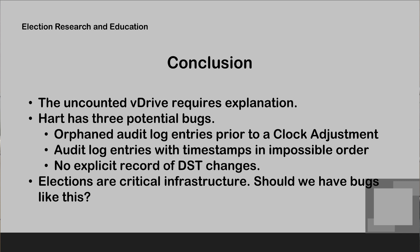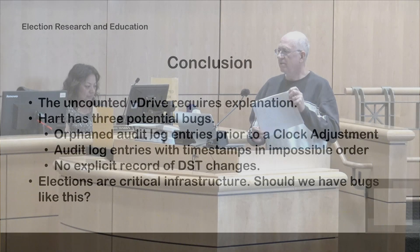I think the uncounted V-drive requires explanation — it's most likely there's a legitimate one, but I don't know. We have the three potential Hart bugs and elections are critical infrastructure. Two workstations self-updated to Pacific time while two did not — a difference in configuration. We have extensive post-daylight savings time transition activity late at night or early morning. Do we have carelessness, lack of procedures, or something else going on? Any questions?